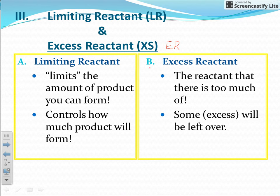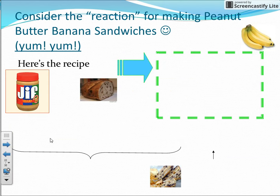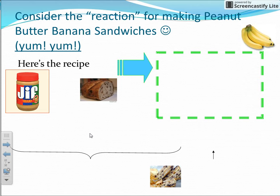There could be a time where both the limiting and the excess reactant run out at exactly the same time — that's when we have what we call a stoichiometric mixture. But in the problems we do, there will be a clear limiting reactant. Before we look at chemistry calculations, let's talk about the concept of limiting reactant using the idea of a recipe, because a chemical reaction is much like a recipe.